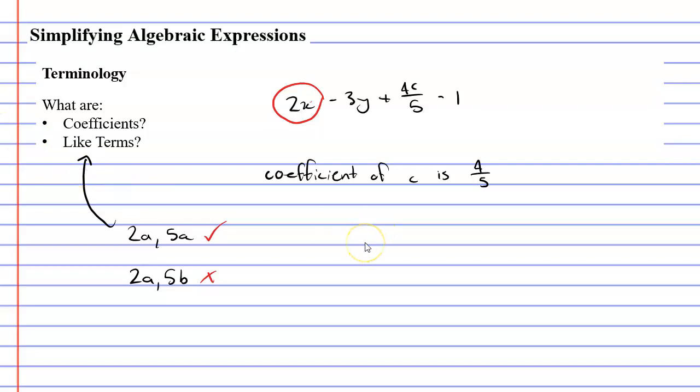And it can get a little more complicated such as 2ab and 5ba. They have the same set of pronumerals. These are actually like terms because they both have 1a and 1b each. The order actually doesn't matter.